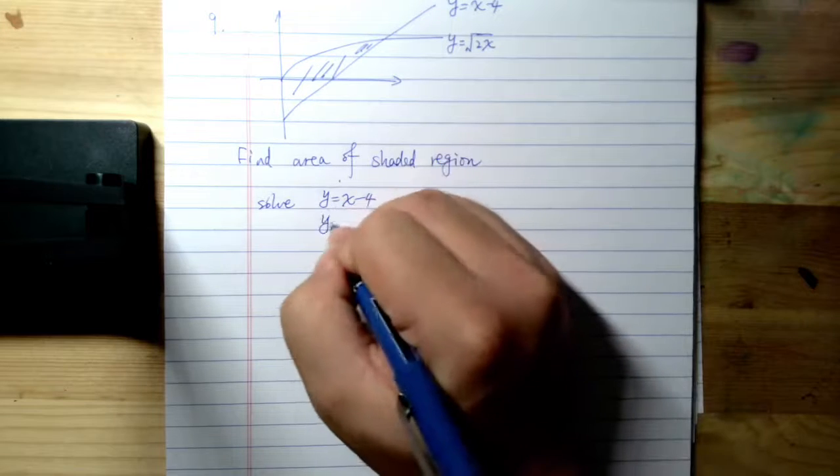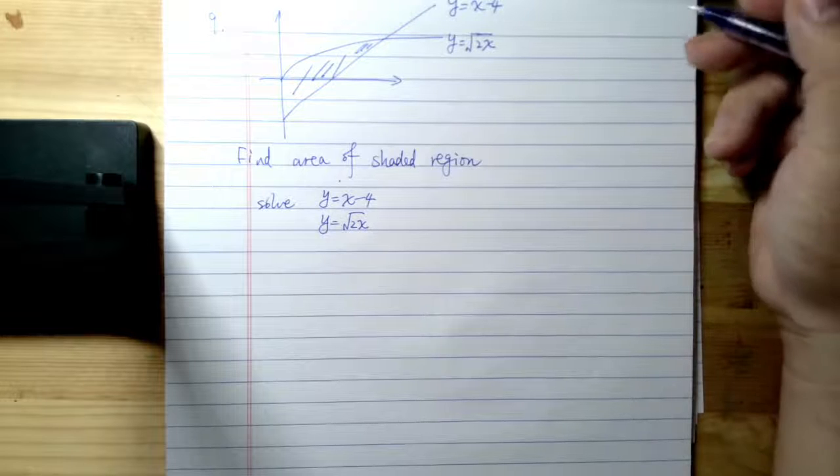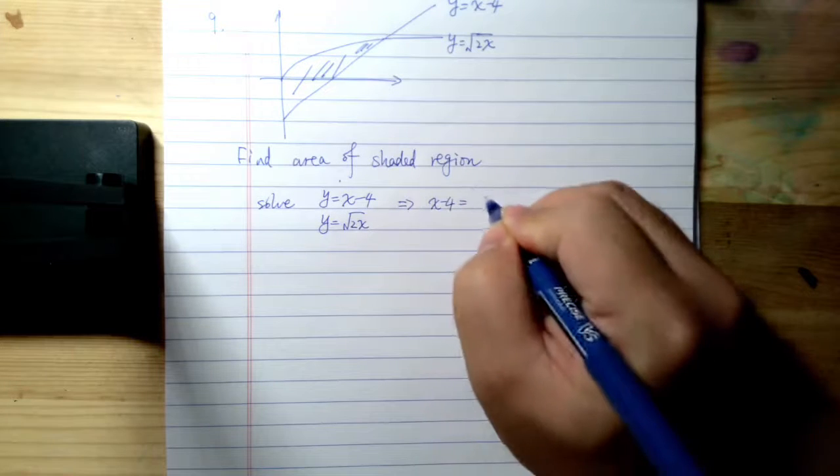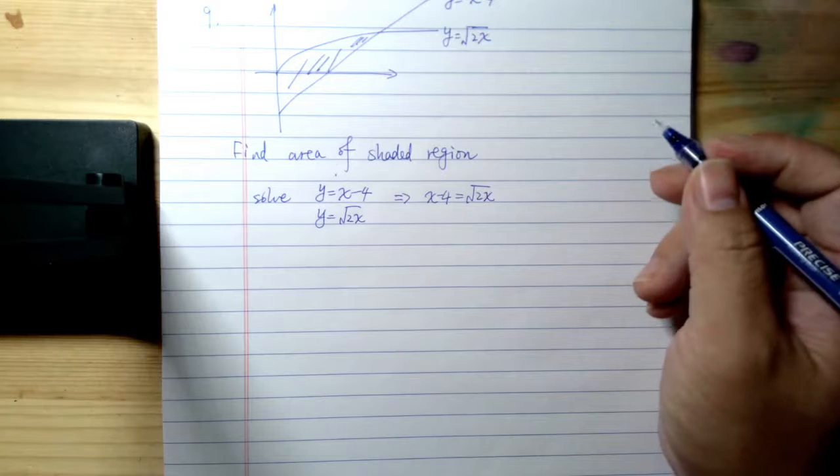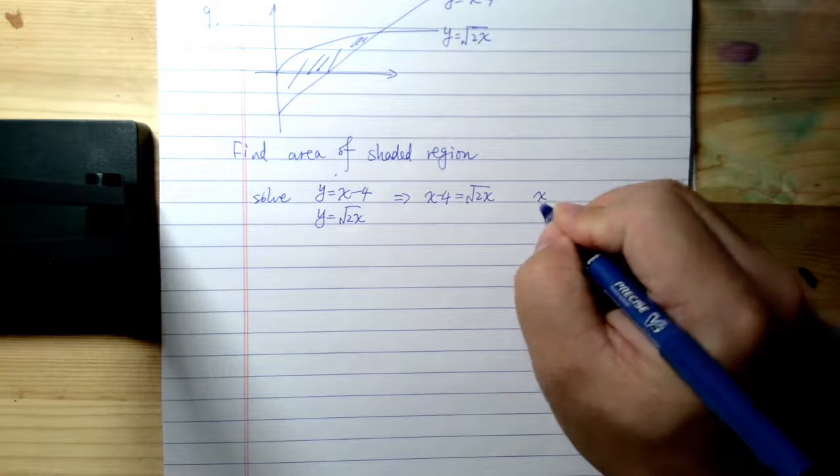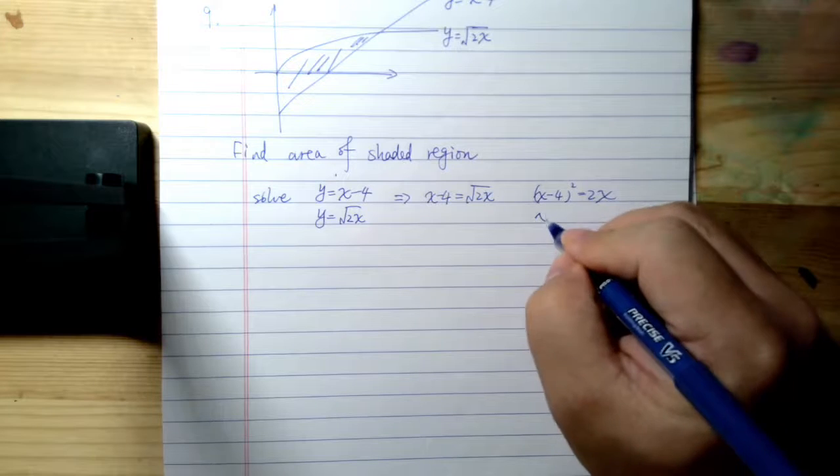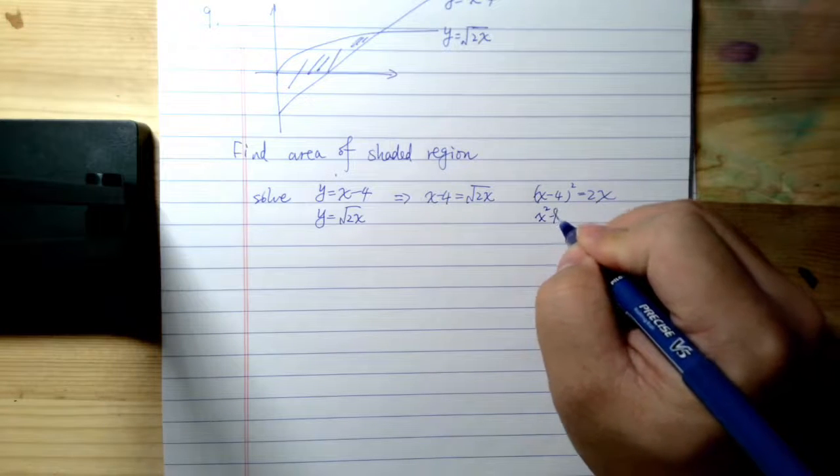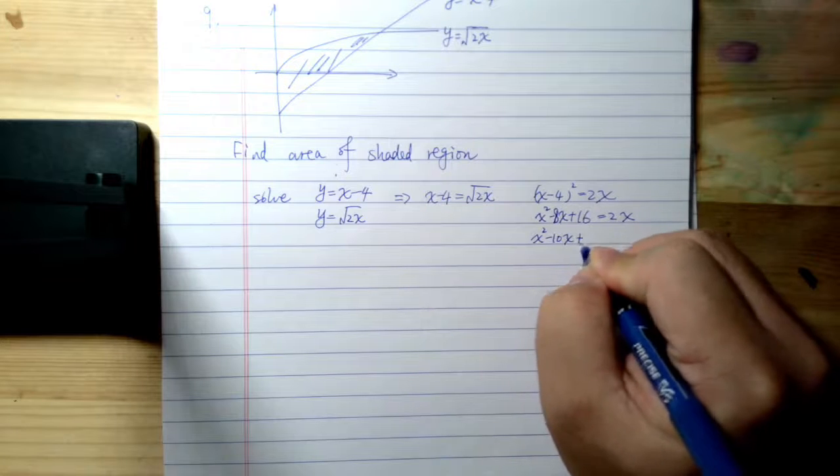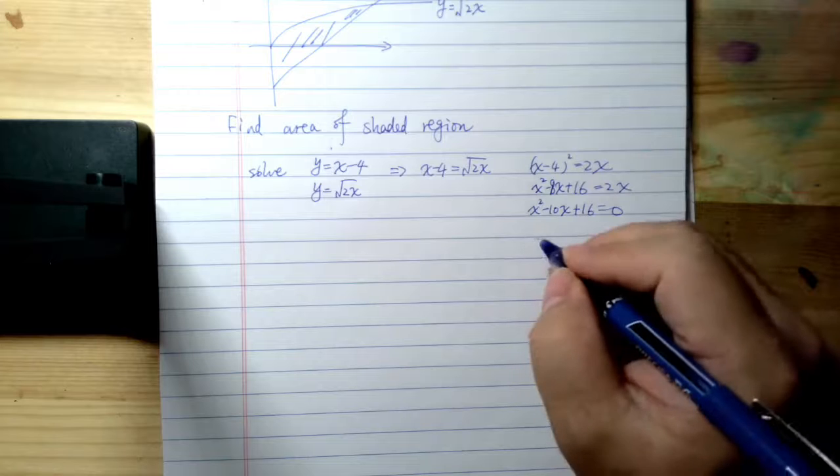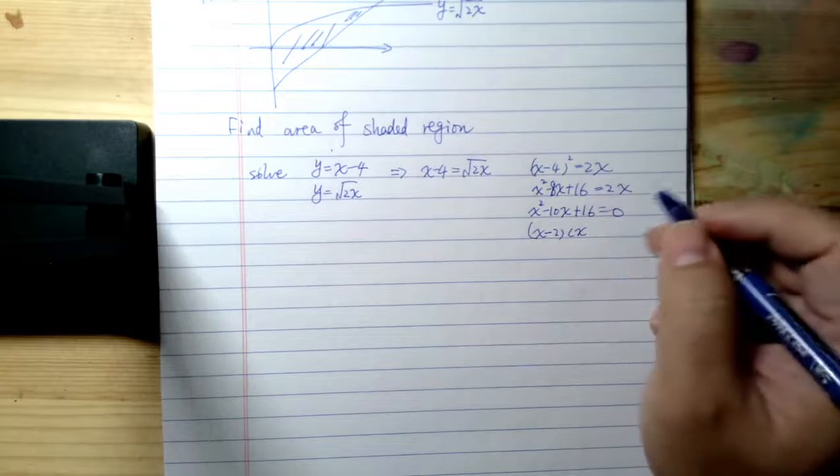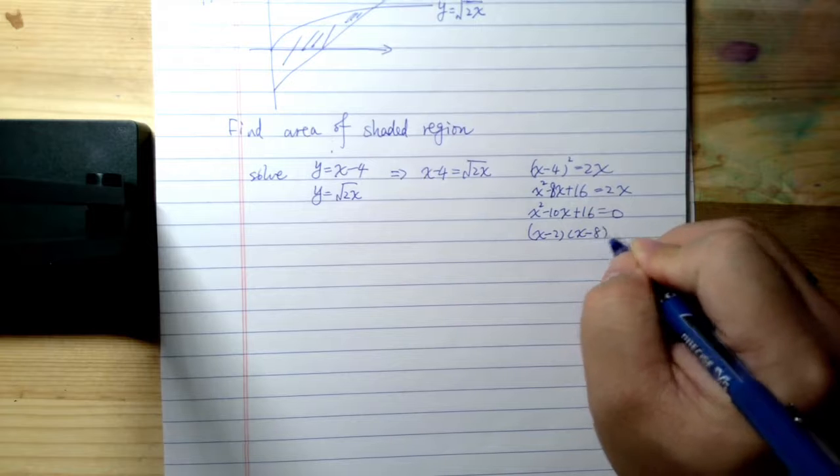That is, solve this: y equals x minus 4, y equals square root of 2x. So solve this system of equations. That is, x minus 4 equals square root of 2x. If you square both sides, x minus 4 squared equals 2x. This is x squared minus 8x plus 16 equals 2x, so x squared minus 10x plus 16 equals 0.